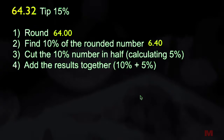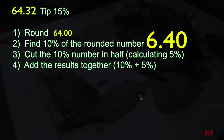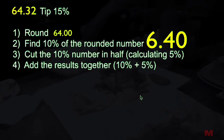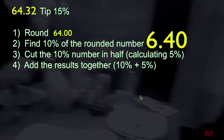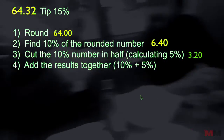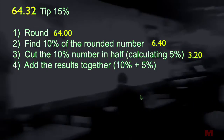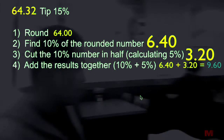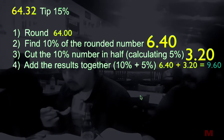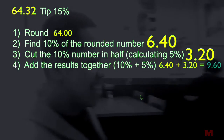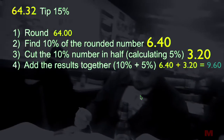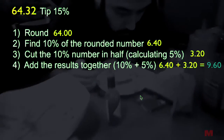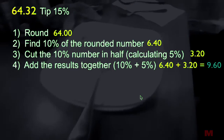Step three: take that $6.40 and cut it in half. What you're really doing is calculating 5% of your rounded number, because half of 10 is 5. So half of $6.40 is just $3.20. Last step: add the results of steps two and three together. You're adding 10% and 5% to get your 15% tip. $6.40 plus $3.20 is $9.60.